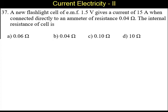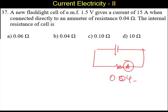Here, the problem can be drawn like this. A battery of 1.5 volts is connected to an ammeter of resistance 0.04 ohms. This is an ammeter, so its value is 0.04 ohms.